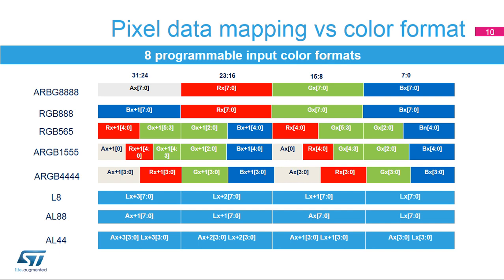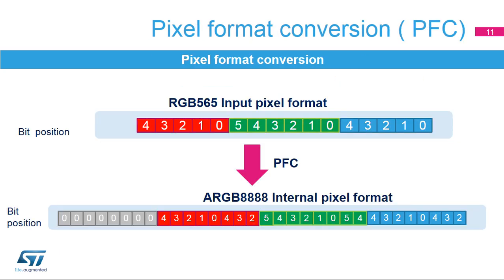The LTDC can be configured with up to 8 programmable input color formats per layer. Direct color formats include ARGB 8888, RGB 8888, RGB 565, ARGB 1555, and ARGB 4444. Indirect color formats include L8 (8-bit luminance or CLUT), AL44 (4-bit alpha and 4-bit luminance), and AL88 (8-bit alpha and 8-bit luminance). When the color format of a bitmap is converted into another one, this operation is called Pixel Format Conversion, or PFC.